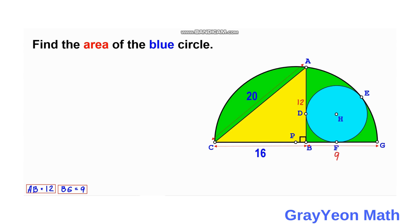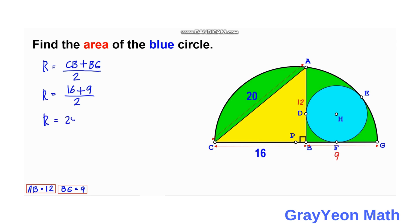Next, we can find the radius of the largest semicircle — call it capital R. The radius equals the diameter CB plus BG divided by 2. So R equals 16 plus 9 over 2, which gives us 25 over 2, or R equals 12.5 units.